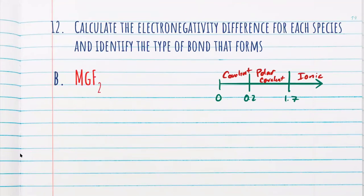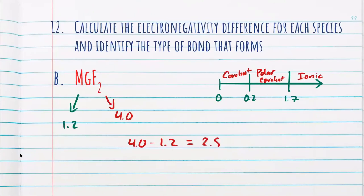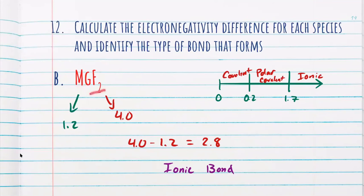Next, we have magnesium fluoride (MgF₂). Magnesium has an electronegativity of 1.2, while fluorine has an electronegativity of 4.0. Finding the difference — 4.0 minus 1.2 — we get 2.8. Looking at our chart, 2.8 lands us at ionic, so we form an ionic bond. Another way to tell is we have a metal, magnesium, with a non-metal, which would also form an ionic bond.